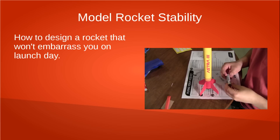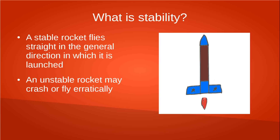If you like to build and launch model rockets that you purchase in the store, you don't need to worry too much about rocket stability, because the rockets you buy are already designed to be stable. However, if you want to design your own rocket, you should know a few things about stability. Basically, a stable rocket flies straight up, or straight in the general direction in which it is launched. An unstable rocket might fly in a circle or even crash into the ground after it leaves the launch pad. Once you understand the basics, it's fairly simple to know what you have to do to make a stable rocket.